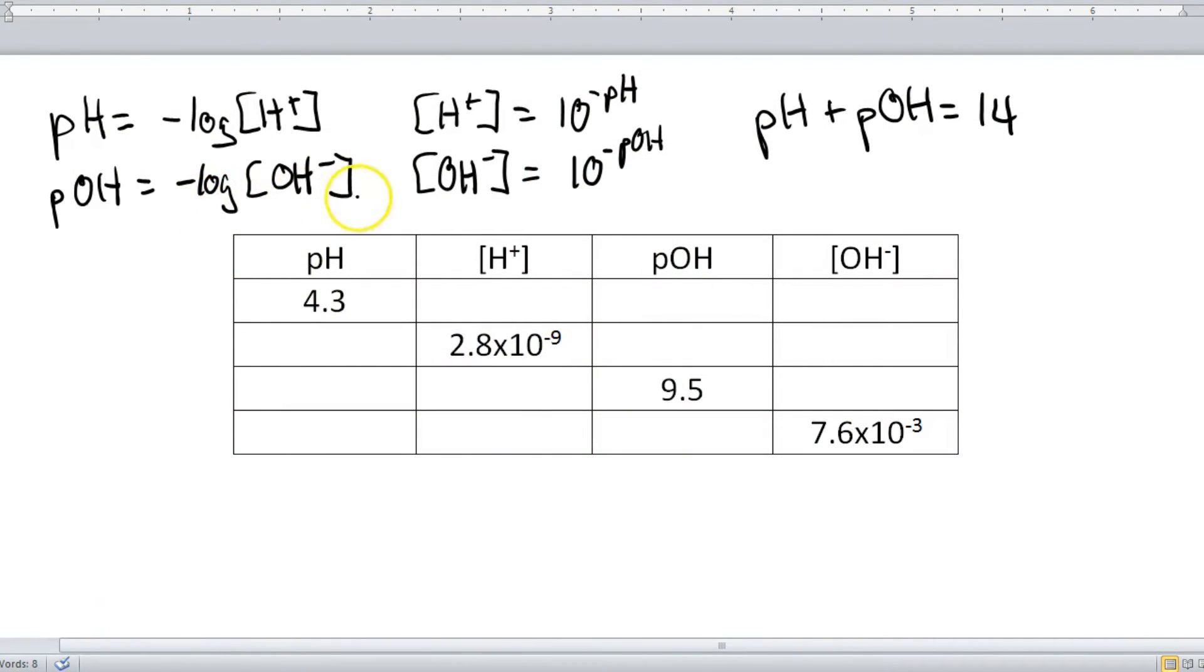Alright. So here we go with the pH calculations. I've got all the formulas written out up top here. I'm going to point out that when you see an ion like this written in brackets, that's simply shorthand notation for concentration. It just makes it a little easier for us to write it out.